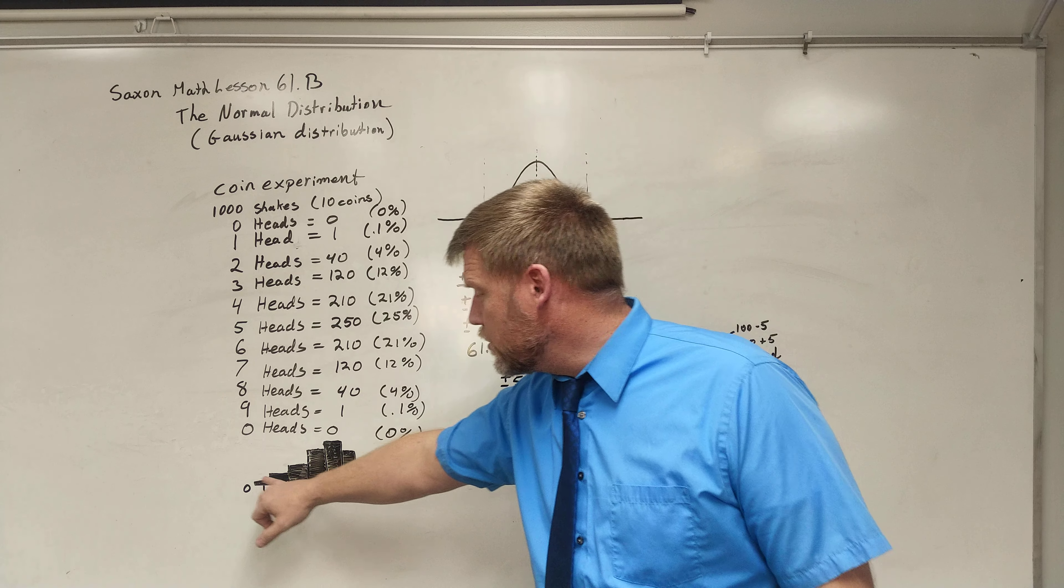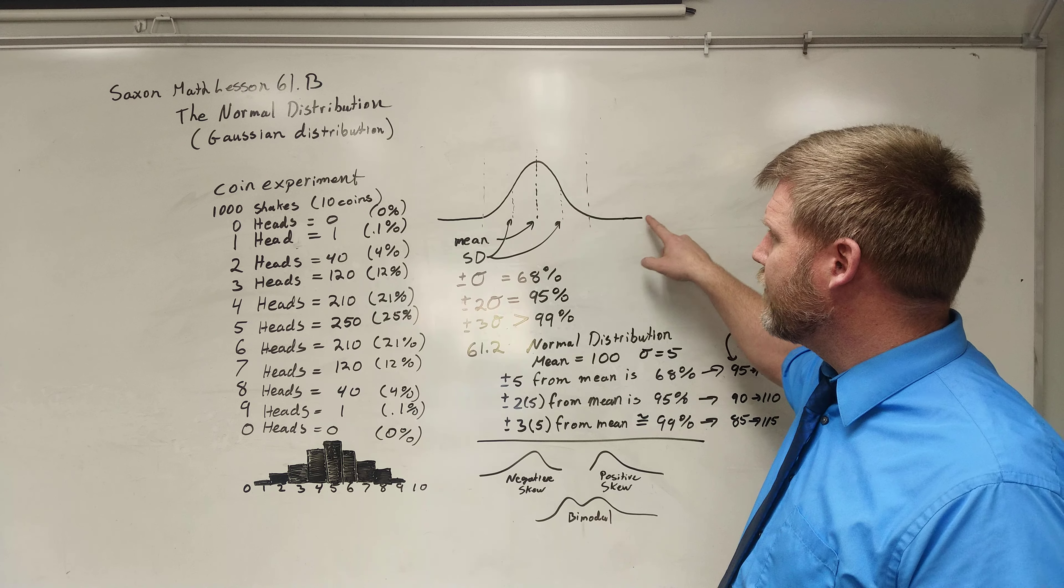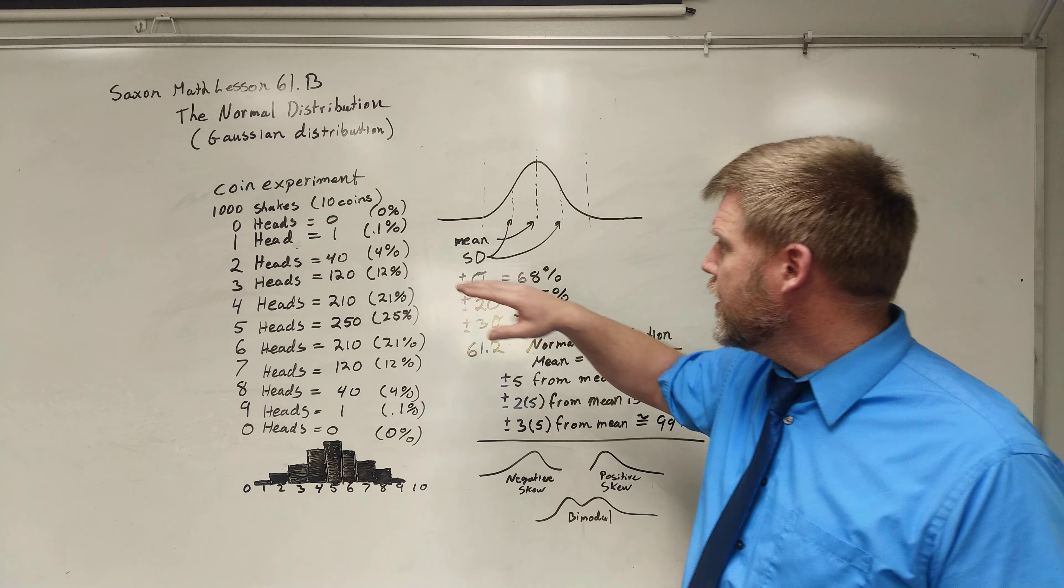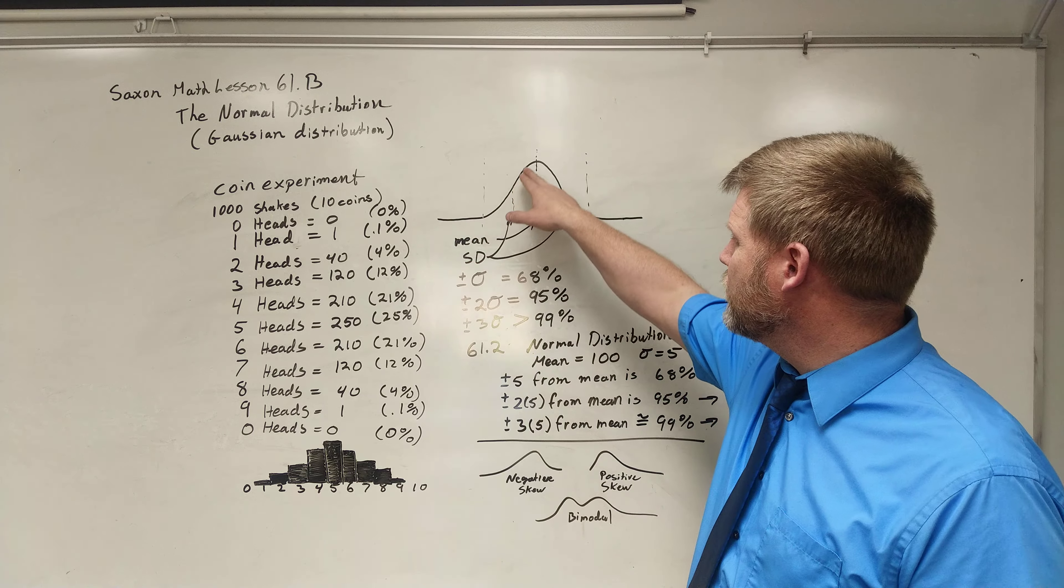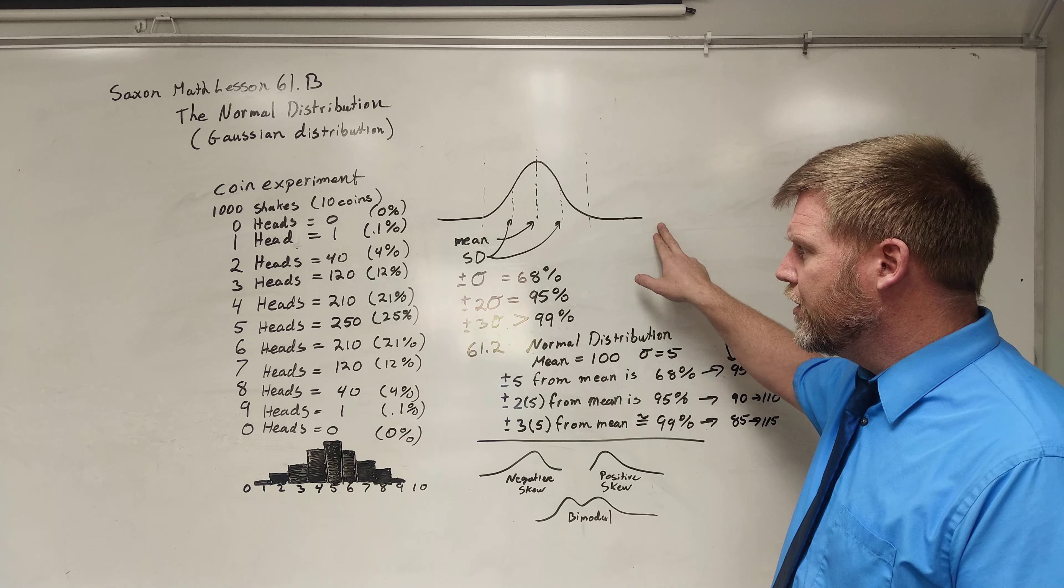Now, if I were to graph that out as smooth as possible, I would get this, which is called a normal distribution graph or a Gaussian distribution. And what this does is it shows that this is the most often, right? And it goes down and has these tails.